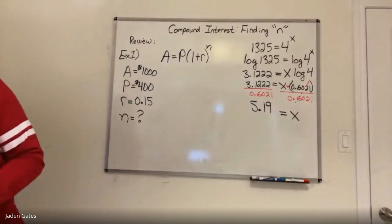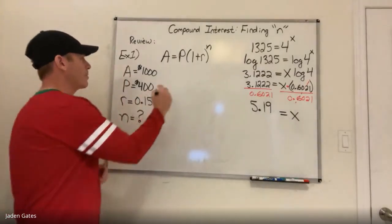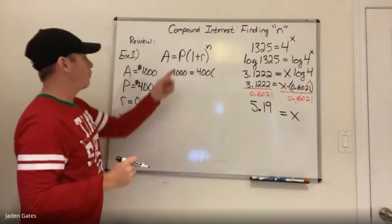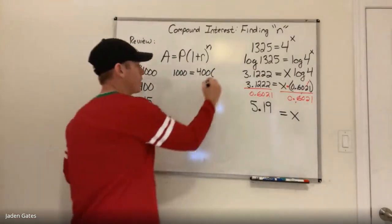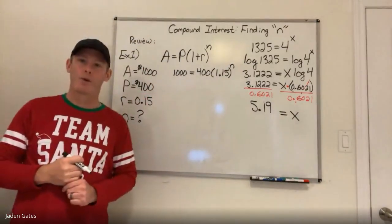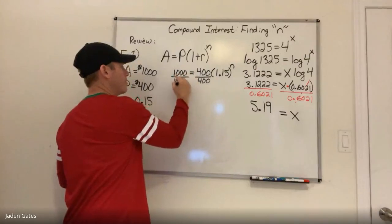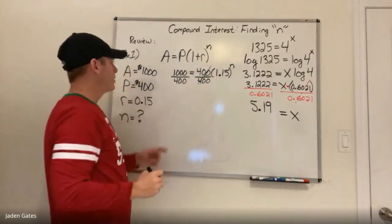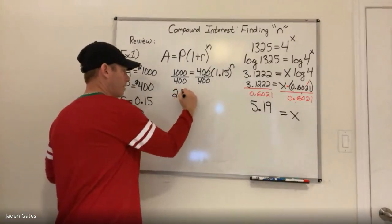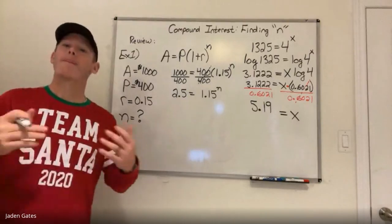We're trying to figure out how many times the interest is added, which will tell us how long it takes. Substituting values: 1000 = 400(1.15)^n. We can't take the log yet — we need to get rid of the 400 first. Dividing both sides by 400: 1000 ÷ 400 = 2.5. So now we have 2.5 = 1.15^n.